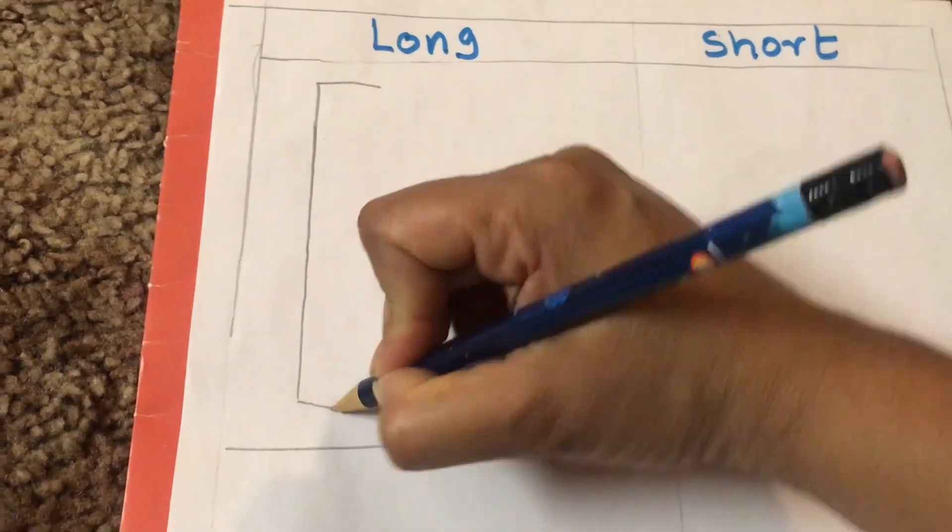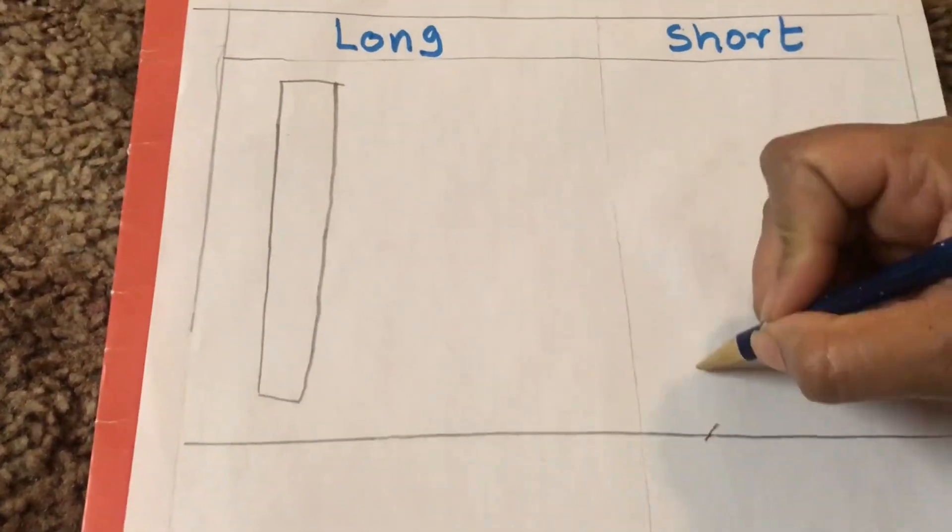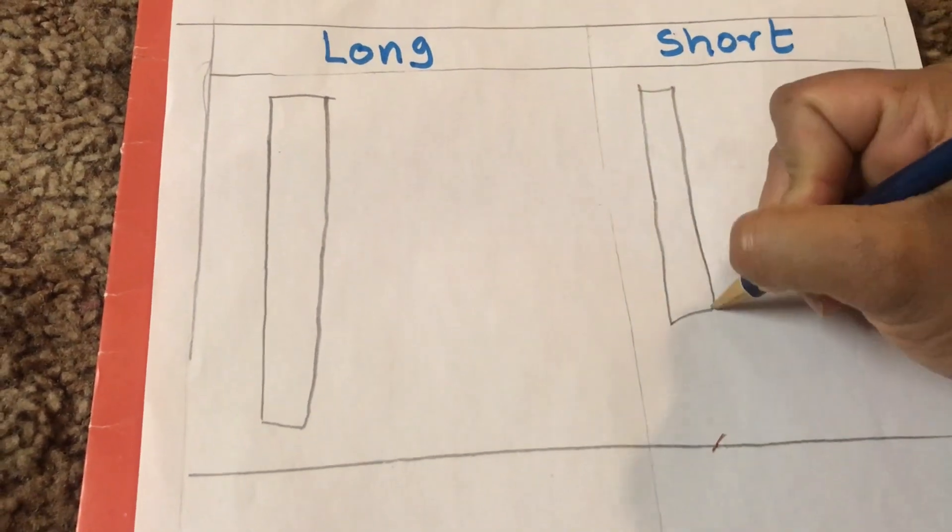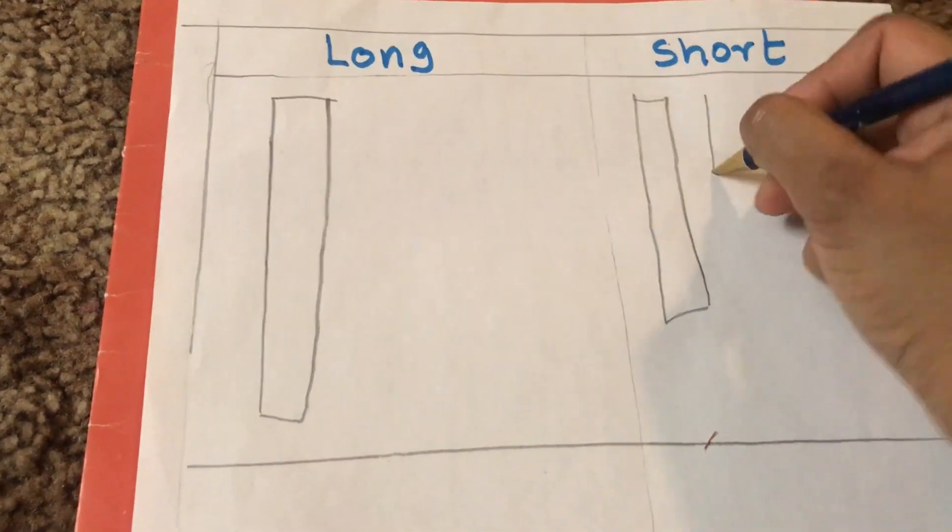You can draw long strips in a long column and short strips in a short column. Here make sure to show which is long and which is short to the learners.